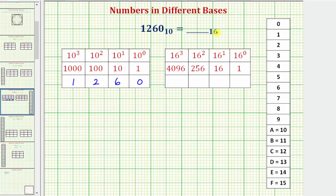For base 16, the place values are based upon powers of 16, where we have the 16 to the zero or ones place value, the 16 to the first or sixteens place value, the 16 squared or 256's place value, and the 16 to the third or 4096's place value. Because each place value can hold the numbers zero through 15, to avoid the confusion of having a two-digit number in any given place value, we use letters to represent the two-digit numbers. So A is equal to 10, B is equal to 11, and so on.